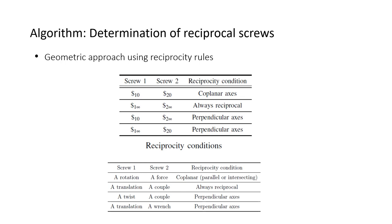Therefore, the reciprocity property makes it possible to obtain the motion information from the corresponding constrained counterpart and vice versa. It is necessary to study how to find the reciprocal screw system for a given one. The geometric approach involves the inspection of the joint axis and applying the reciprocity conditions by observation as given in the top table. One can easily obtain a basis of the reciprocal screw system. The geometric conditions can be expressed explicitly by taking instantaneous motions and system of forces as shown in the bottom table.